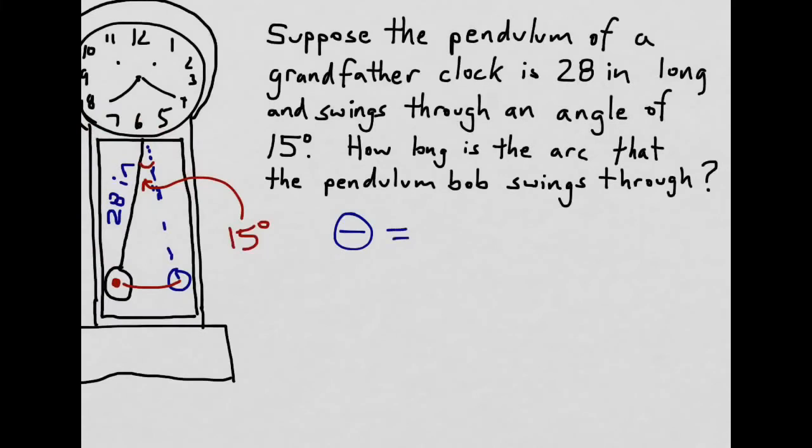So let's try to use our formula, theta equals s divided by r. But something important to realize is that the value of theta must be in radians. Because it's the radian measure that corresponds to a ratio of the radius to the corresponding arc length.